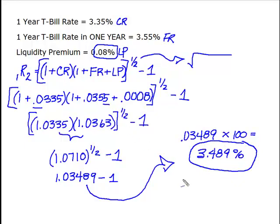But what this tells me, this 3.489, is that because I bought my T-bill, my one-year T-bill, at a rate of 3.35%, and the rate a year from now is going to be 3.55%, because I've got my money tied up in this lower interest bearing...